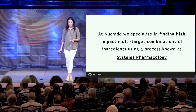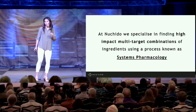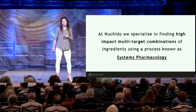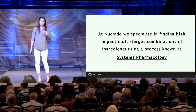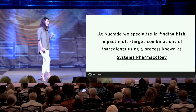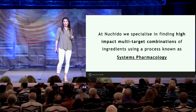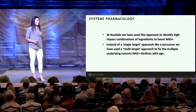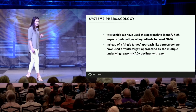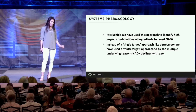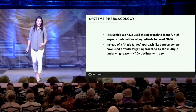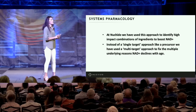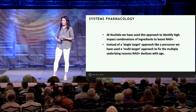Multi-target combinations of interventions are quite hard to design. At Nuchido, we specialize in finding high-impact multi-target combinations of ingredients using a process known as systems pharmacology — a method used in drug discovery to identify active molecules that are much more efficient. We've used this approach to identify ingredient combinations designed to boost NAD by fixing the underlying reasons for its decline: restoring the salvage pathway, preventing the NAMPT enzyme from declining, and stopping cells from wasting NAD.